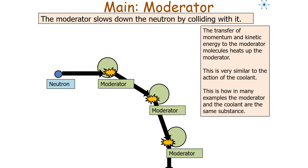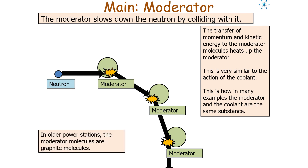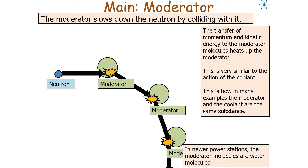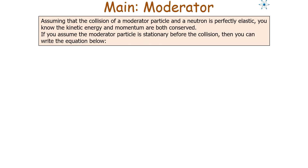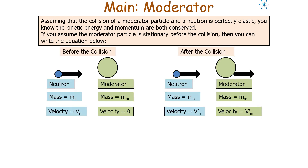Because the moderator heats up similarly to the coolant, in many nuclear fission reactors the moderator and the coolant are in fact the same substance. In older power stations the moderator is graphite, whilst in newer power stations it is water. Assuming the collision of a moderator particle and a neutron is perfectly elastic, kinetic energy and momentum are both conserved. If we assume the moderator particle is stationary before the collision, we can write equations using the mass of the neutron, the mass of the moderator, and their velocities before and after the collision — noting the moderator velocity before the collision is zero.